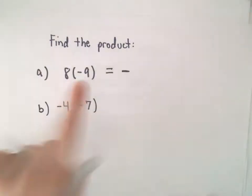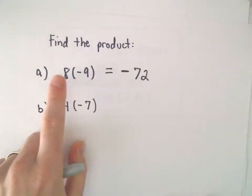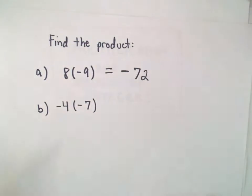And then I forget all about the signs. I just say, well, 8 times 9 is 72. Therefore, 8 times negative 9 is going to give us negative 72.